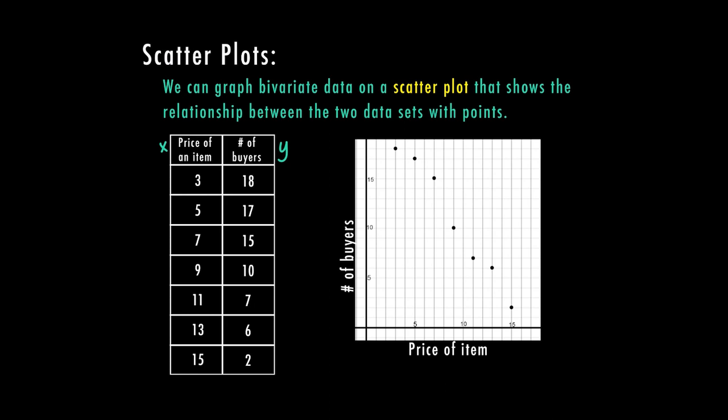So here we've labeled all the points on the graph from 318 all the way to 152. And we can see here the relationship between the price of the items: as the price of the items increases, the number of buyers decreases. And what this is showing us on our graph is that this price increase and number of buyer decrease is causing it to go in a downward direction, which is going to be negative. So this would be a negative relationship.